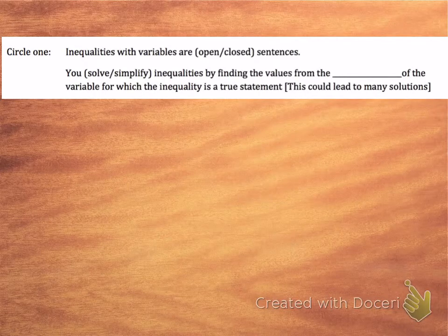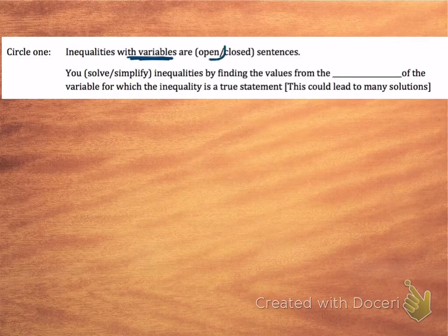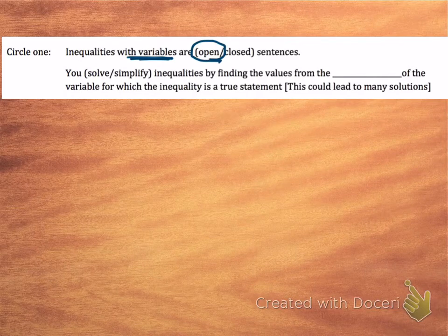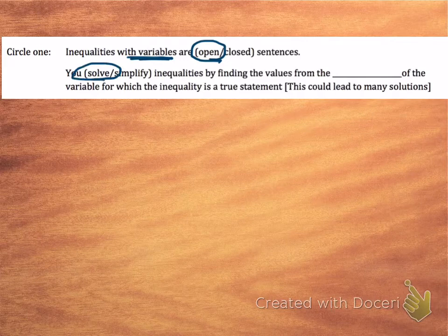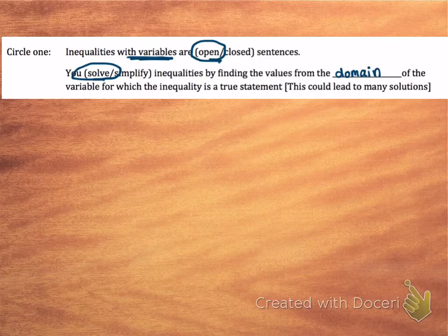So inequalities with variables — when we have variables, those are open sentences. You want to think about: do you solve or simplify inequalities by finding values? If you're finding values for the variable, you are solving inequalities. And you're finding values from the domain of the variable, which just means the kind of choices that the variables could stand for.